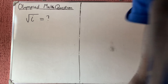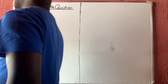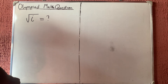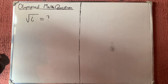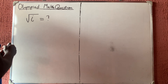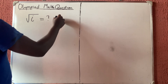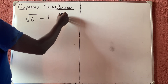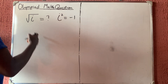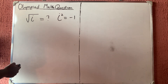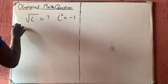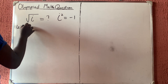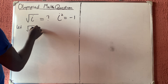We're asked to evaluate this problem — this is the Riemann problem. They ask: what is the square root of iota? We know that the square of iota is minus one, but what about the square root of iota?